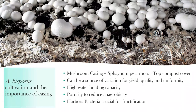The most important physiological property of casing is its high water holding capacity, as mushrooms need a lot of water for growth. It has a porosity that allows gaseous exchange, a high oxygen environment — because exposure to oxygen is another trigger for vegetative mycelium to transfer into reproductive growth, or pinning formation, which subsequently becomes mushrooms. Casing also harbors bacteria crucial for fructification; Pseudomonas in particular are known to be important. Without them in an axenic casing, you don't get mushrooms.